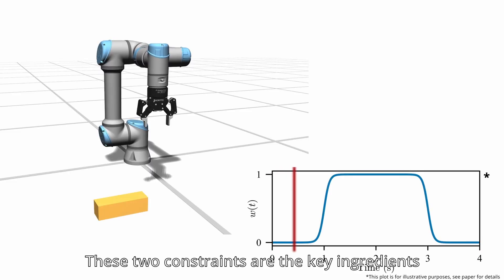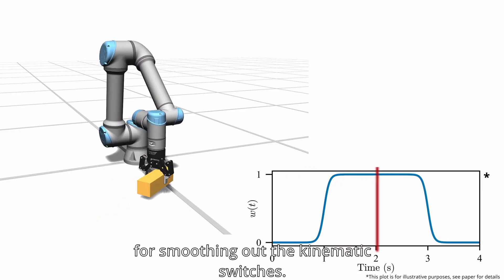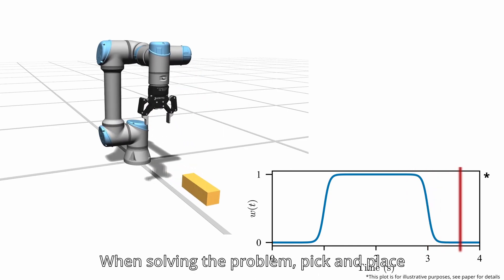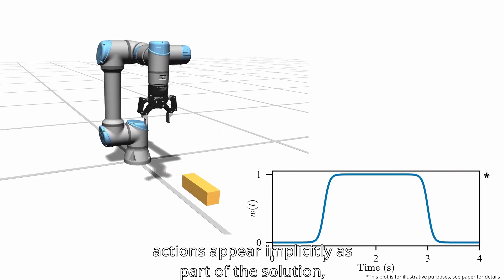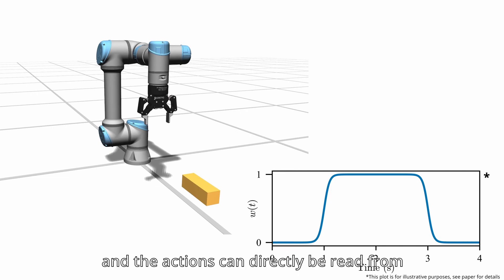These two constraints are the key ingredients for smoothing out the kinematic switches. When solving the problem, pick-and-place actions appear implicitly as part of the solution, and the actions can directly be read from the value of the association weights.